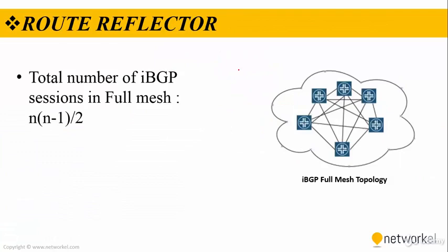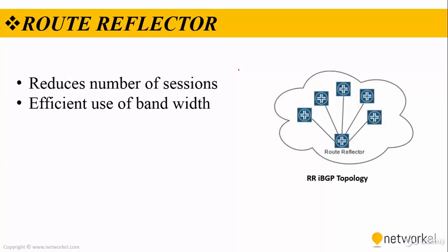BGP specifies that routes learned via iBGP are never propagated to other iBGP peers. The result is that a full mesh of iBGP peers is required within an autonomous system. For example, with only 13 routers, 78 iBGP sessions would need to be maintained. With the BGP route reflector, the need for a full mesh of iBGP neighbors is removed, because the route reflector has the ability to distribute iBGP routes to other iBGP routers, reducing the number of sessions and using bandwidth more efficiently.